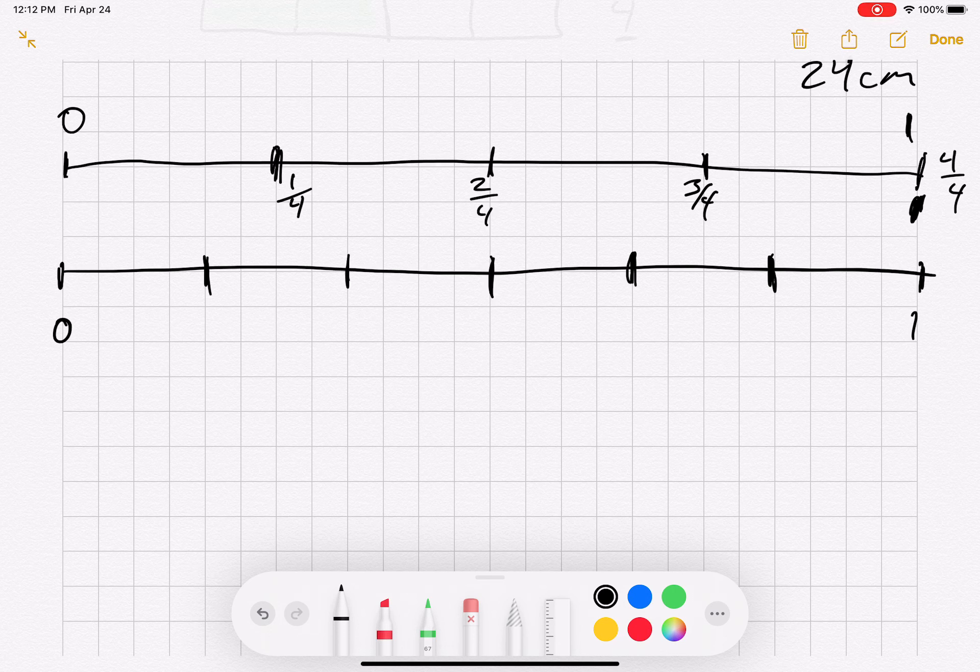Now I'm going to look at the number line on the bottom. We look at the scale of that number line and what it's divided into, and it's broken down into six equal parts. Again, how many parts tells you the denominator, how many equal parts: six.